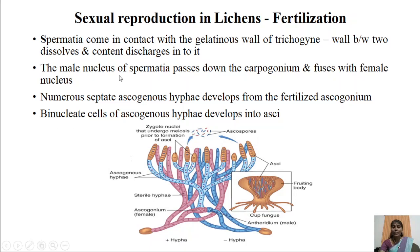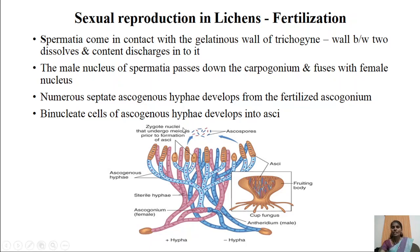The male nucleus of the spermatia passes down the carpogonium through septal pores and fuses with the female nuclei residing in the ascogonium region. After fusion, numerous septate ascogenous hyphae develop from the fertilized ascogonium. The binucleate cells of these ascogenous hyphae develop into ascus mother cells called asci.